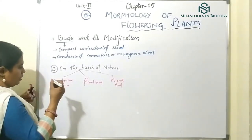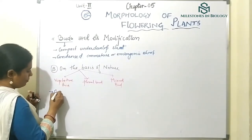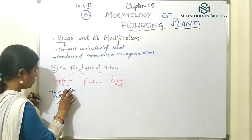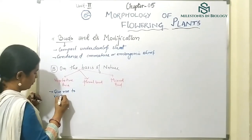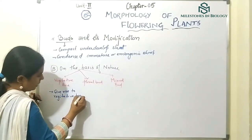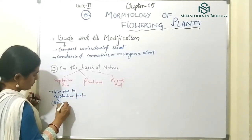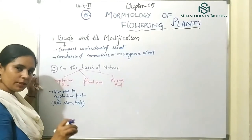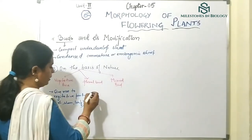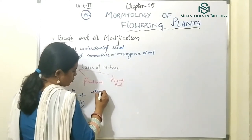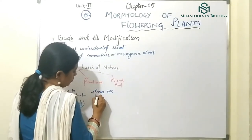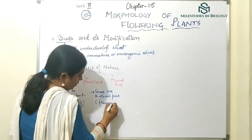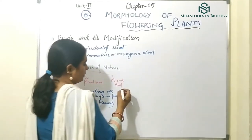A vegetative bud gives rise to vegetative parts like root, stem, and leaf. If any bud gives rise to vegetative parts, it is called a vegetative bud. If the bud gives rise to floral parts — meaning it produces a flower — it will be called a floral bud.